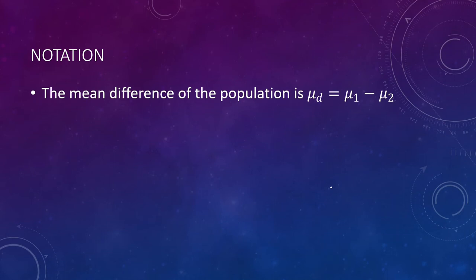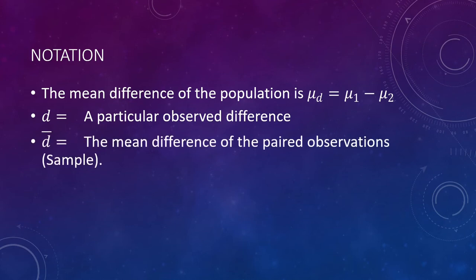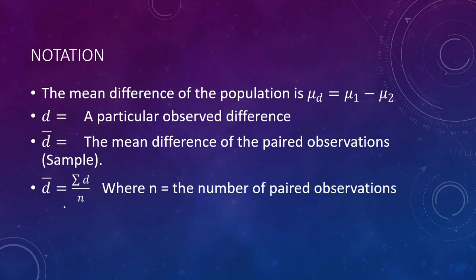Let's look at some notation. The mean difference of a population is μ sub D, which equals the mean of the first group minus the mean of the second group. D is a particular observed difference from a pair. D-bar is the mean difference of the paired observations in the sample — we take the average of all the differences between each of the pairs. D-bar is calculated by taking the summation of all the differences divided by the number of pairs of observations.